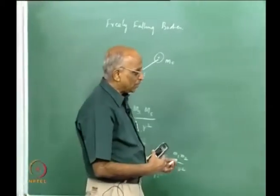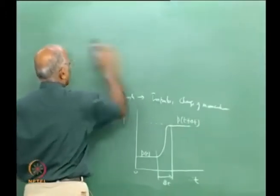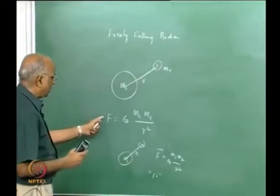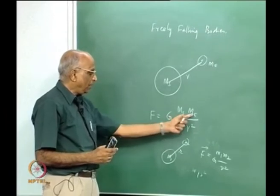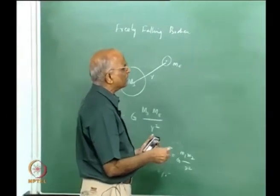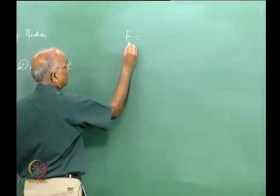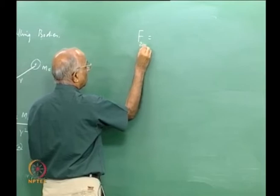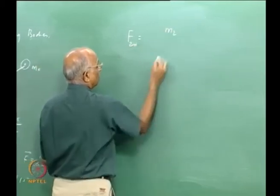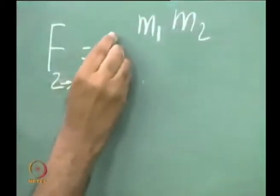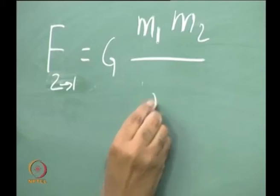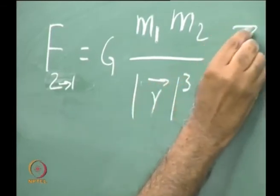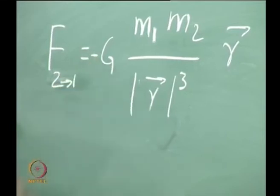To write the law correctly as a vector equation: the force on body 2 attracted towards body 1 is F = minus G times m1 times m2 divided by r-squared, with r written as a vector — specifically minus G m1 m2 times r-hat divided by r-squared, where the negative sign indicates attraction. This is the universal law for gravitation.